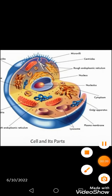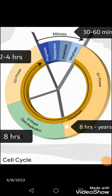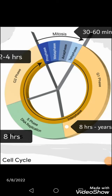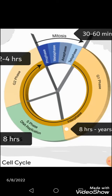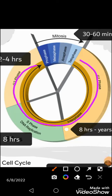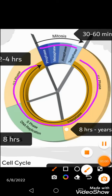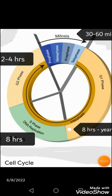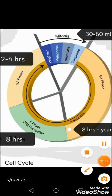The cell cycle has two major divisions. The largest part is called interphase, and the smaller one is called mitosis. We will first name the various phases of the interphase.